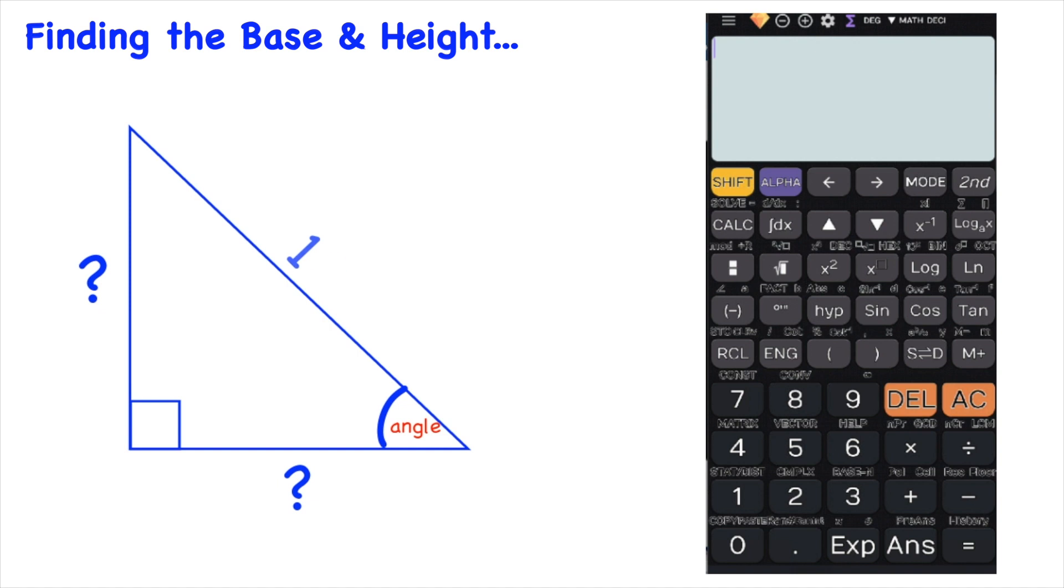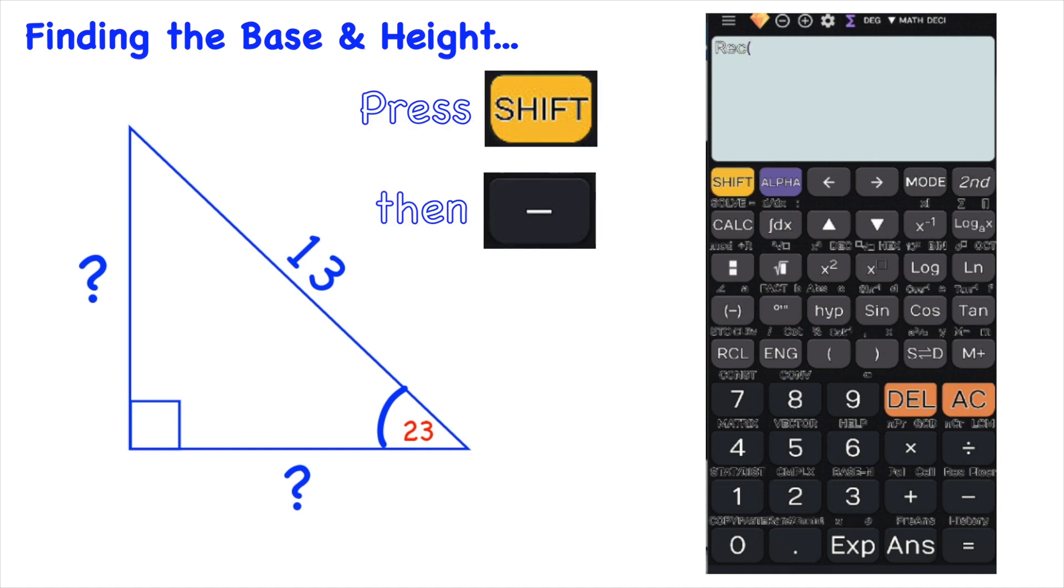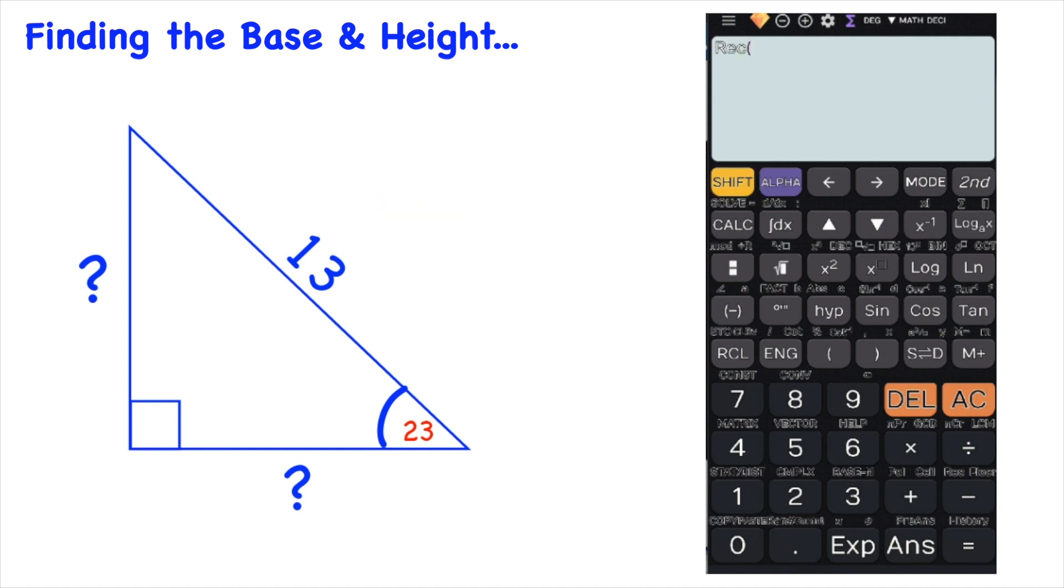So say the length of the hypotenuse was 13 and the angle was 23 and we wanted to find the lengths of the base and the height. So do shift minus this time and you can see rec with an open bracket, rec. That rec stands for rectangular coordinates. So the answer will be given as a set of rectangular coordinates meaning we'll get an x coordinate which represents our base of the triangle and a y coordinate which represents the height of the triangle.